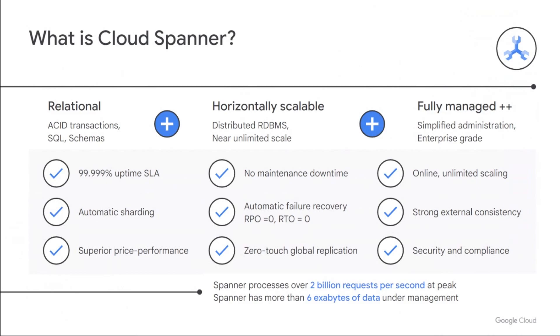Spanner offers zero RPO and zero RTO in case of a zone failure in a regional instance, and zero RPO and zero RTO in case of a regional failure in a multi-regional instance. It provides zero-touch global replication, and all the security and compliance you would expect from an enterprise database service. In terms of metrics, Spanner processes over 2 billion requests per second at peak and has more than six exabytes of data under management — reflecting the scale at which it operates. Google has a number of billion-plus user products, and many of them run on Spanner.